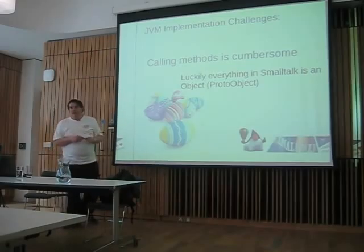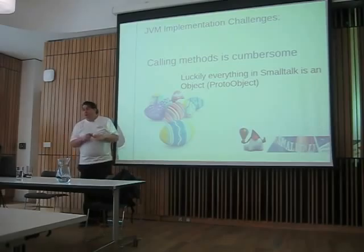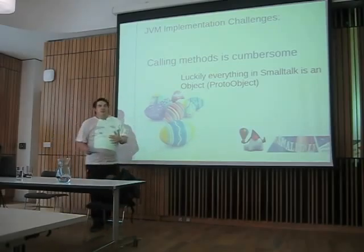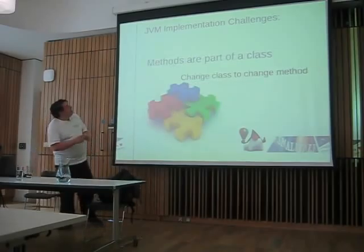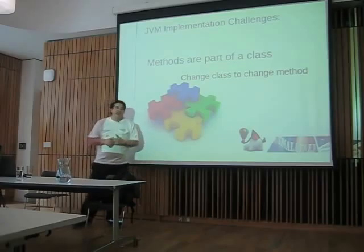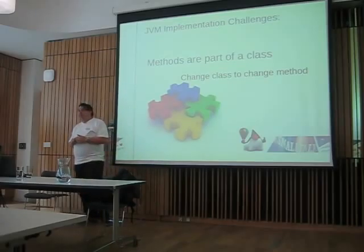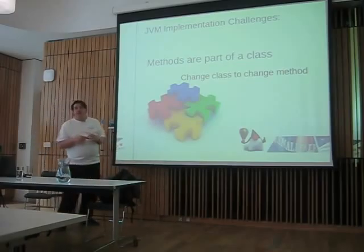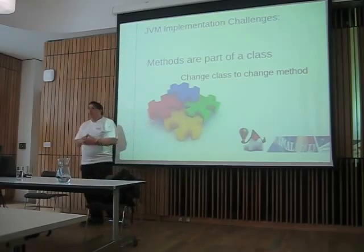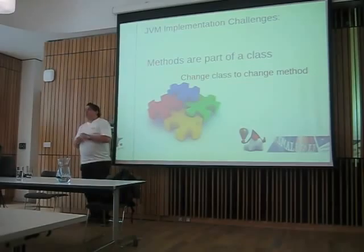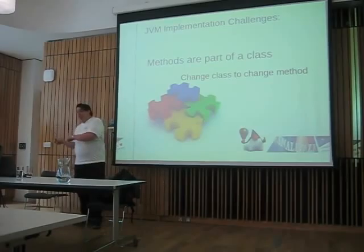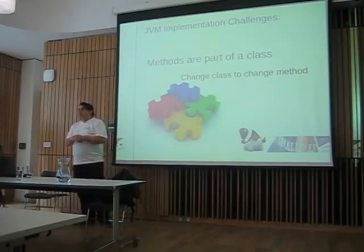The methods themselves, while they're hard to call because they're so static, you also can't change a method without changing the entire class — they're part and parcel of the same package. So if you wanted to change the source of a method, you'd have to recompile the entire class. To get around that, I don't actually create a method in the Java sense — I create a first-class object that is a method, and I put that in the method dictionary, so the two are kept separate.